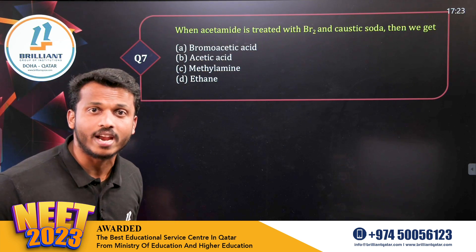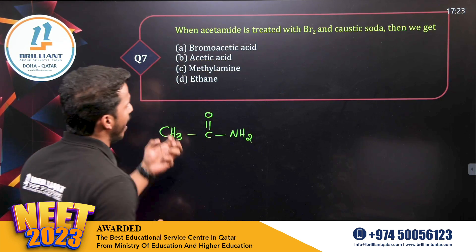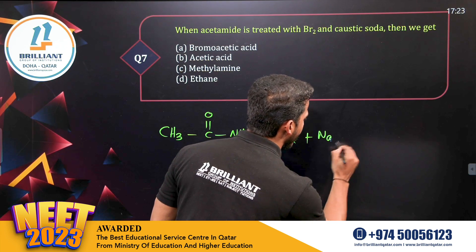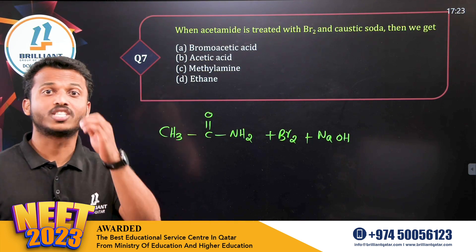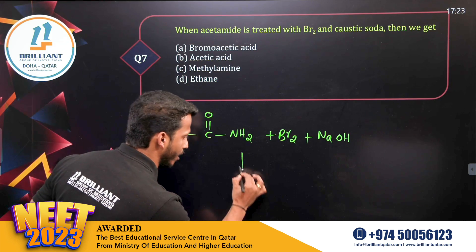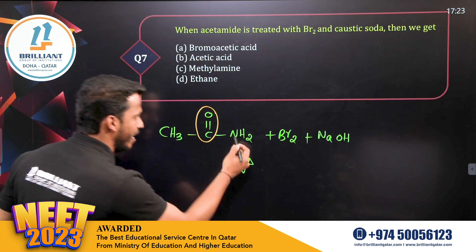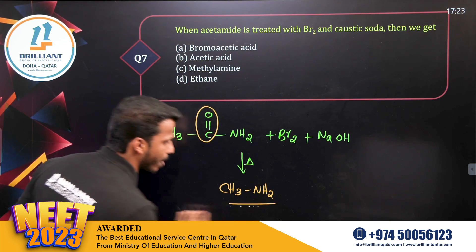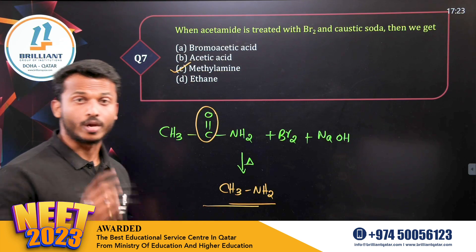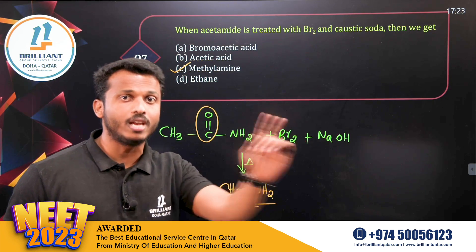Question number seven: when acetamide (ethanamide, CH₃CONH₂) is treated with bromine and caustic soda (NaOH), this is called the Hoffman bromamide degradation reaction. Amide with bromine and NaOH — upon heating, the CO group is removed from the amide, and the product is CH₃NH₂ — methanamine or methylamine. Option C. In Hoffman bromamide degradation, the product is an amine with one carbon fewer than the starting amide.